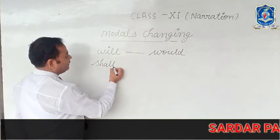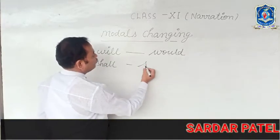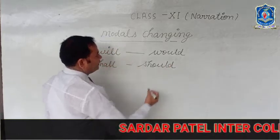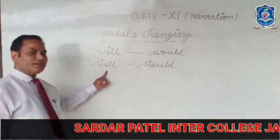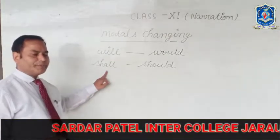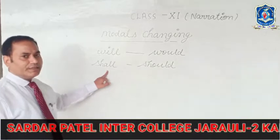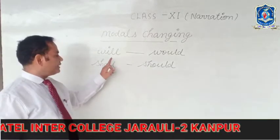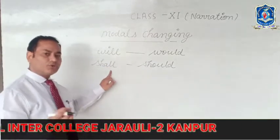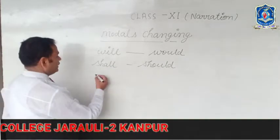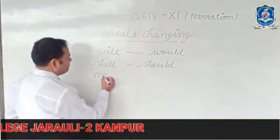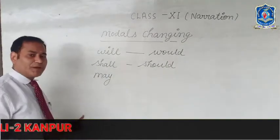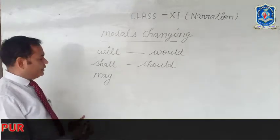The future modal 'shall' is changed to 'should'. Both 'will' and 'shall' are auxiliary verbs which belong to future tense. So if 'will' comes in direct speech, we convert it to 'would', and if 'shall' comes, we convert it to 'should'.